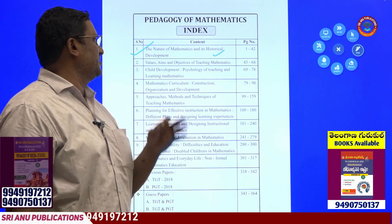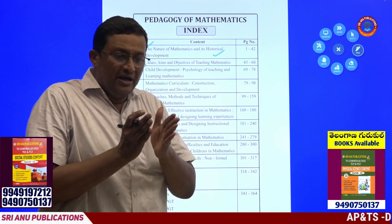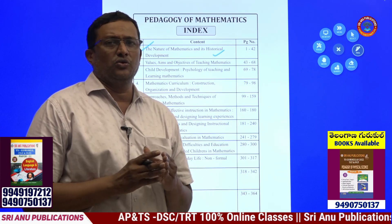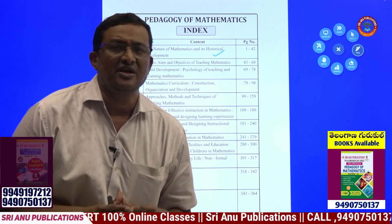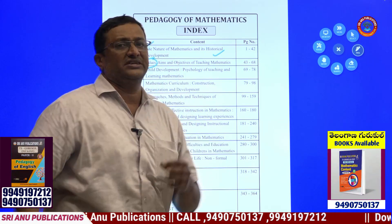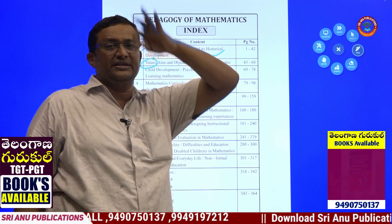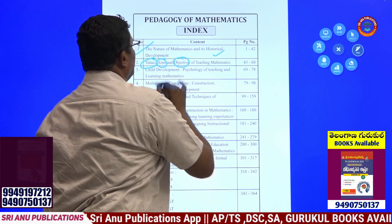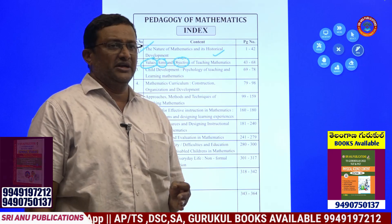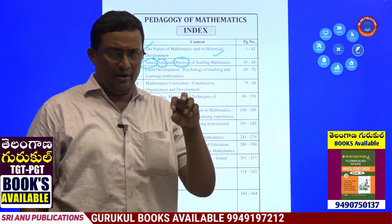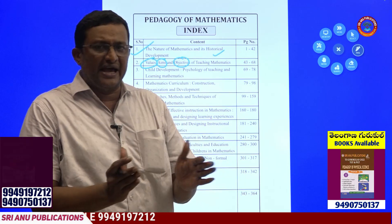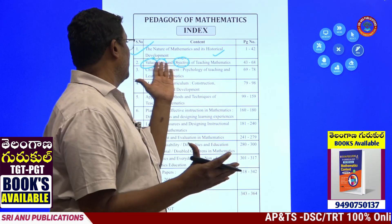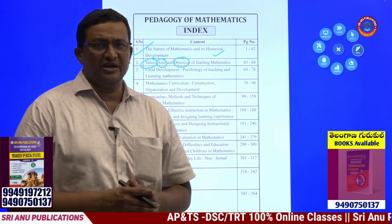Next is Values, Aims, and Objectives of Teaching Mathematics. It is an elaborated concept with so many bits. What are the different values developed while learning mathematics? What do you mean by Aims, Objectives, and Specifications of Learning Mathematics? In mathematics learning: Aims, Objectives, Specifications, Bloom's Taxonomy, and Academic Standards.